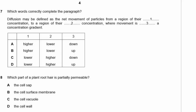Question 7: Which words correctly complete the paragraph? Diffusion may be defined as the net movement of particles from a region of high concentration to a region of low concentration. Since diffusion is passive — no energy in — it goes from high to low. This is described as moving down a concentration gradient. The answer is high, low, down.